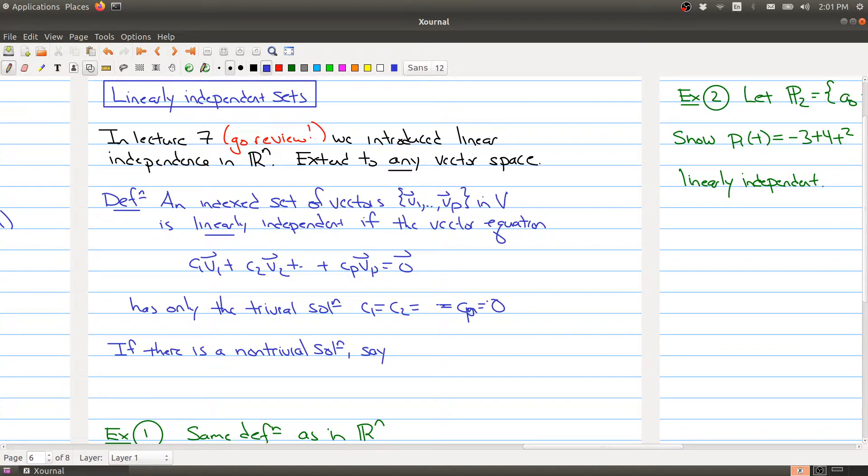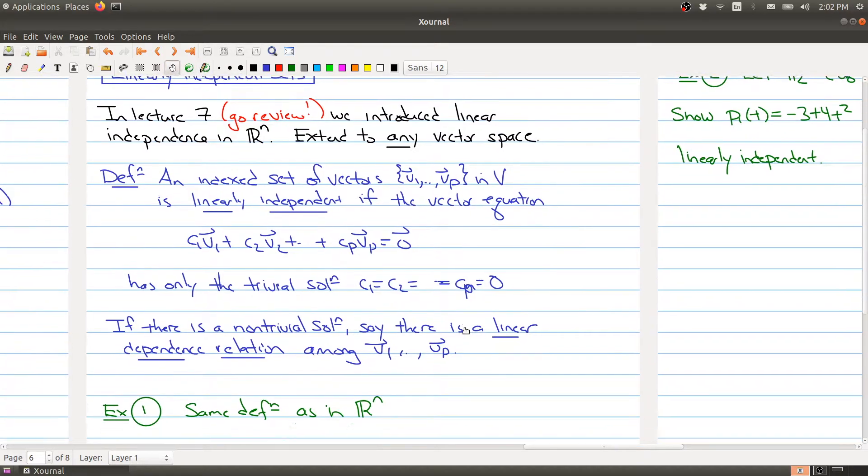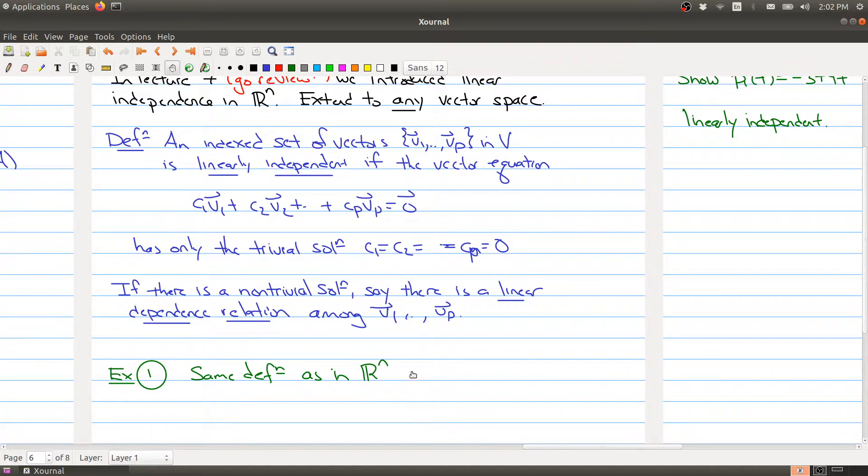And remember what that means: C_1, all of the C_i's have to be equal to 0. And if there's a non-trivial solution, we would say that there is a linear dependence relation among the vectors V_1 up to V_p. So as I was just saying,